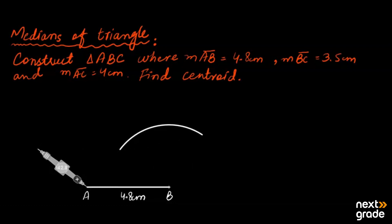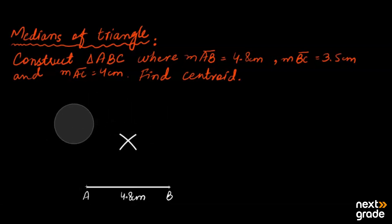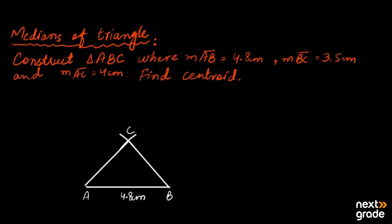We move to point A and draw another arc. Where the arcs intersect, that point of intersection represents the third vertex C. The extra arcs can be raised or erased. The names of A and B points are confirmed, and since AC = 4 cm and BC = 3.5 cm were given, our triangle ABC is now constructed.